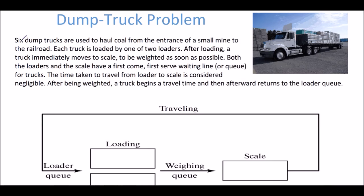So let's look at this example. It says six dump trucks are used to haul coal from the entrance of a small mine to the railroad. Each truck is loaded by one of two loaders — you can have however many loaders or trucks you want depending on the kind of example you're looking at. After loading, a truck immediately moves to the scale to be weighed as soon as possible.